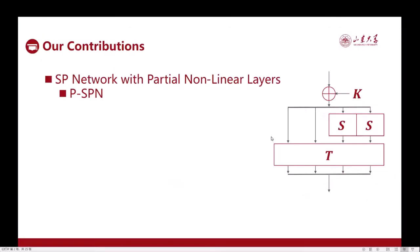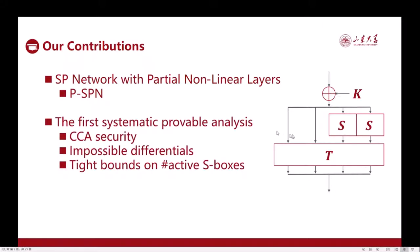We studied a novel block cipher structure named SP network with partial nonlinear layers that is obtained by removing a part of the S-boxes in a normal SP network. We provide the first systematic probable security treatments, prove security against CCA attacks and impossible differential attacks, show tight bounds on the number of active S-boxes in differential trails, and provide principled linear layers that can help achieve these tight bounds.